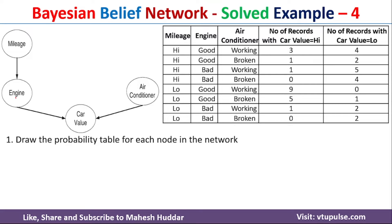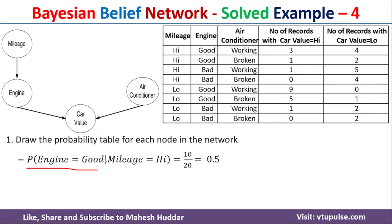The next node is engine. The probability of engine depends on mileage, so we need to calculate: probability of engine being good or bad given mileage is high or low. Starting with probability of engine equal to good given mileage equal to high — we consider only the high mileage examples, which gives 20 records. Out of those 20, engine is good in the cases: 3 plus 1 is 4, plus 6 is 10. So 10 out of 20, giving a probability of 0.5.